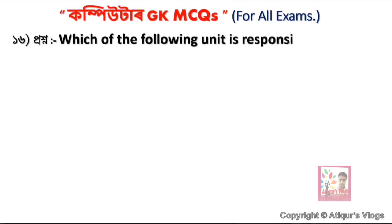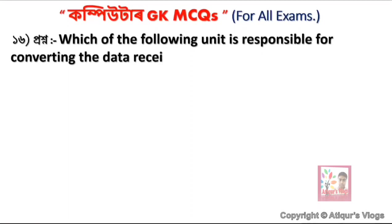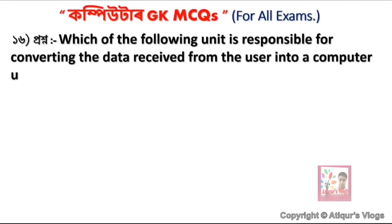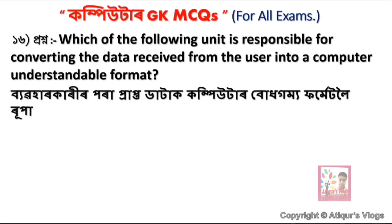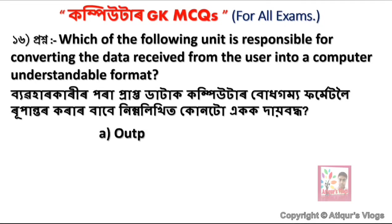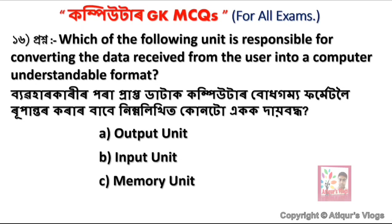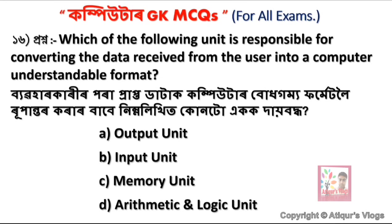Which of the following units is responsible for converting the data received from the user into a computer-understandable format? Option A is Output Unit, option B is Input Unit, option C is Memory Unit, and option D is Arithmetic and Logic Unit.